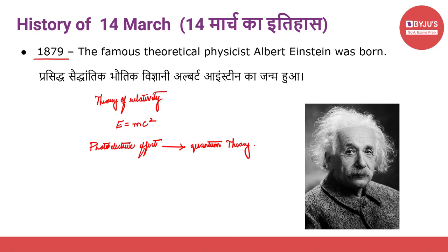Einstein explained the effect by proposing that light consists of small particles called photons, which carry energy proportional to the frequency of light. The photoelectric effect is the basis for photosynthesis, telecommunications networks, solar cells, imaging, and many other applications. He was awarded the Nobel Prize in Physics in 1921. 18th April 1955 में इनका निधन हो गया, जब ये 76 वर्ष के थे.